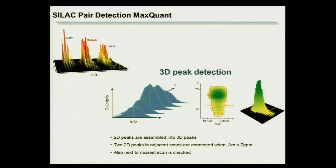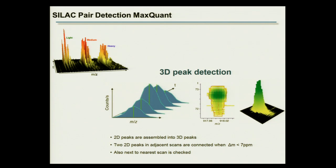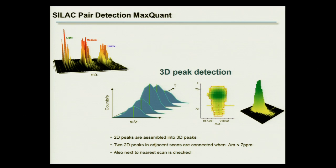How do we actually quantify peptides? In a sample with three SILAC states, you have three clusters representing light, medium, and heavy peptides. A program like MaxQuant looks at the signal in m/z and count space and performs 3D peak detection in the time domain as well. It compares these signals for all SILAC states to come up with peptide ratios and ultimately protein ratios.